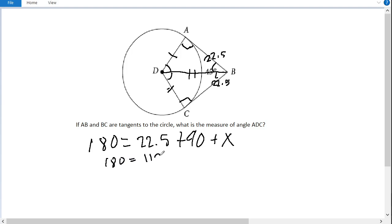So we know that 180 equals 112.5 plus x. And now we simply subtract from both sides and we get x equals 67.5.